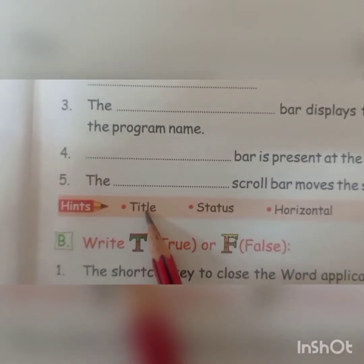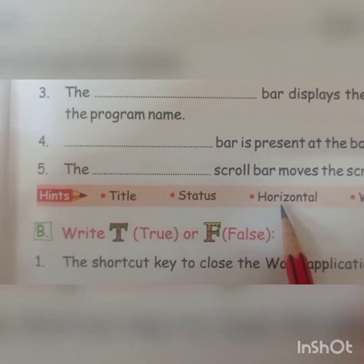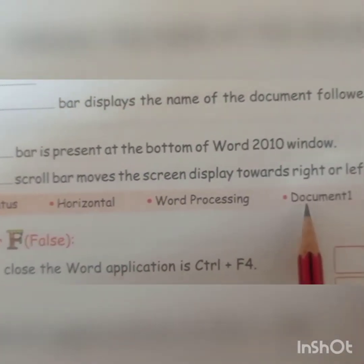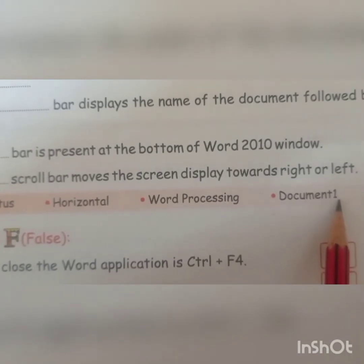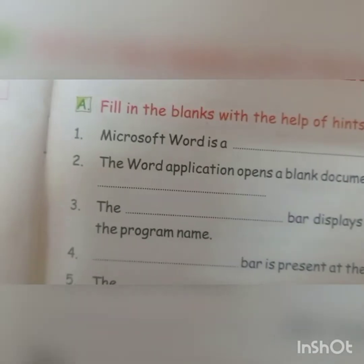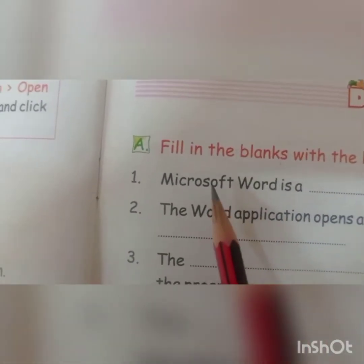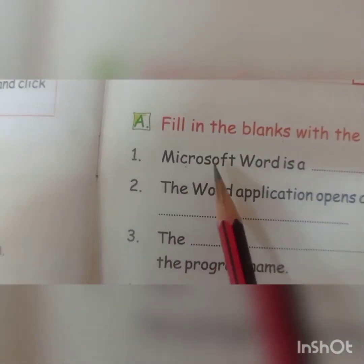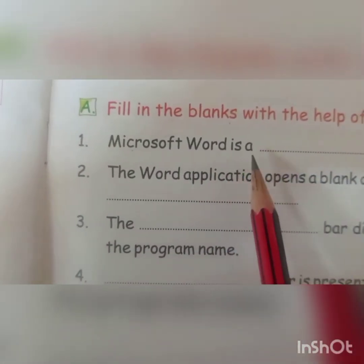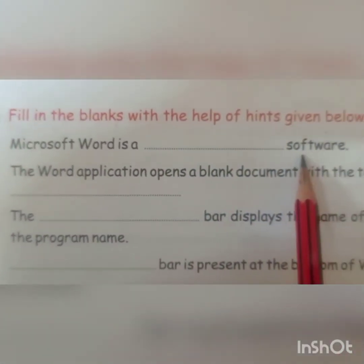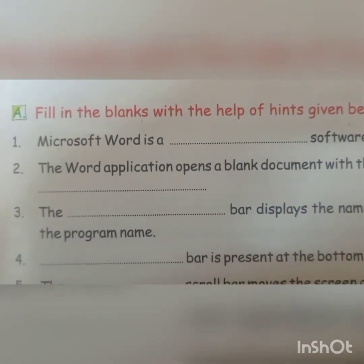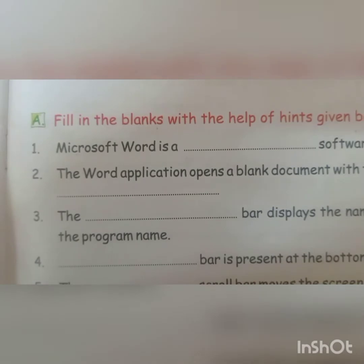The hints are: title, status, horizontal, word processing, and document. Our first sentence is: Microsoft Word is a software. Microsoft Word is a word processing software.